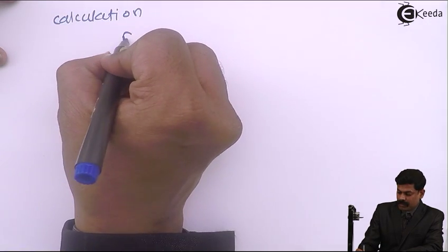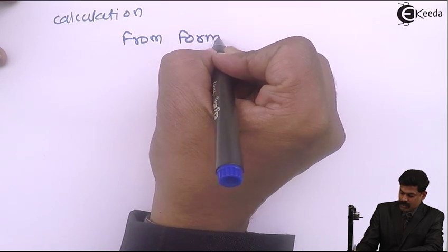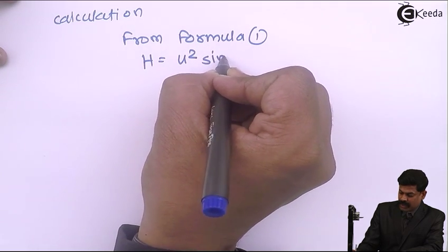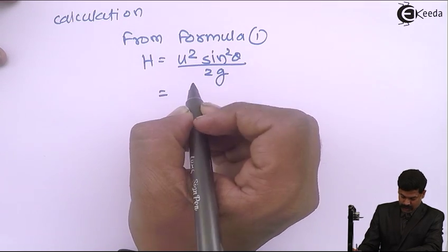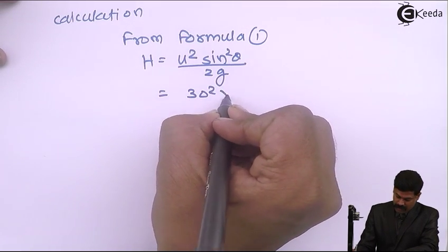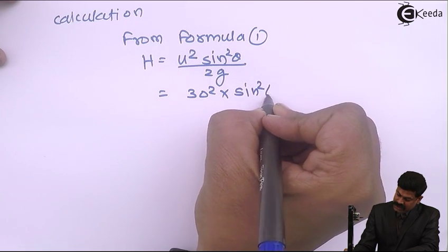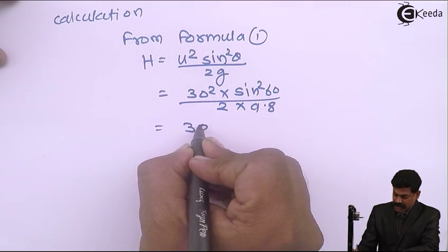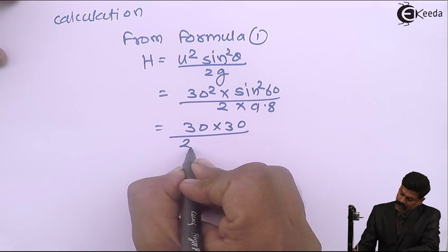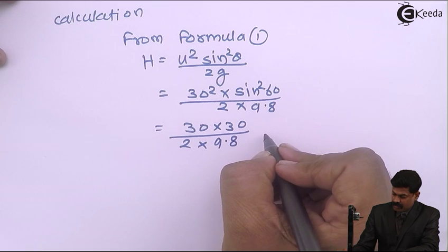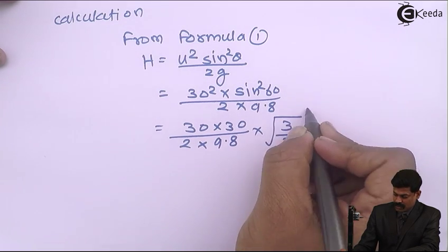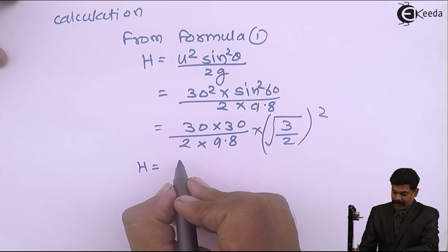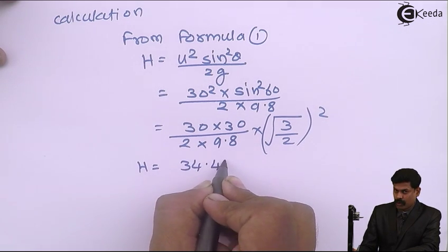Calculation from formula 1: H equals u square sine square theta by 2g. So, u is 30 squared, multiplied by sine square 60, divided by 2 into 9.81. Sine 60 is root 3 by 2, so substituting: 30 into 30, divided by 2 into 9.8, multiplied by root 3 by 2 squared. The maximum height reached is 34.44 meter.